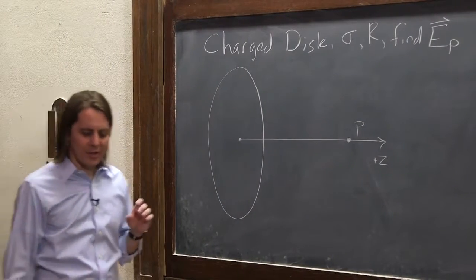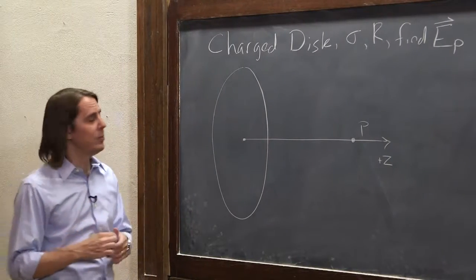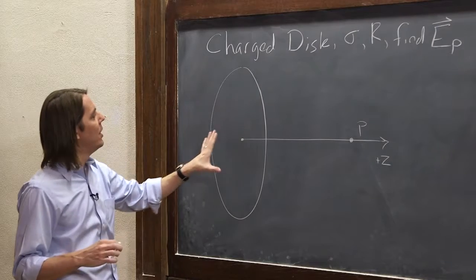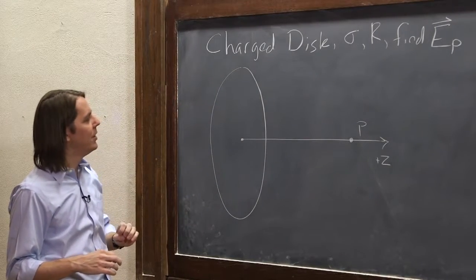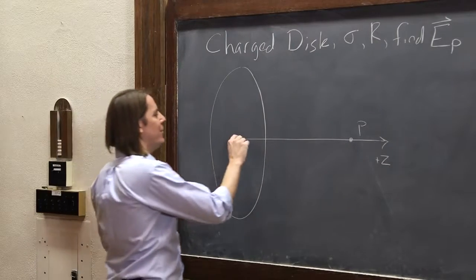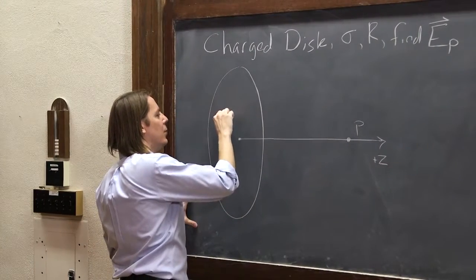So the first thing, like I said, is you've got to think about what's your charge density like, what coordinate system you're using. So we're going to use polar coordinates. We have to find a little chunk on this disk that we can describe its dq. So what we're going to think about is some point here on the disk at a radius, a little r.